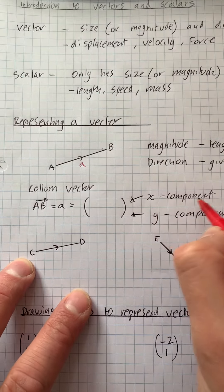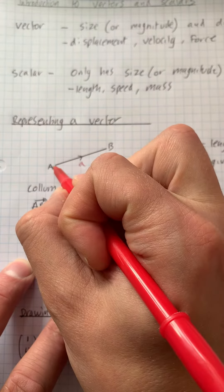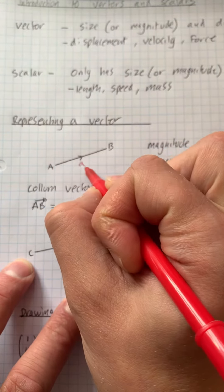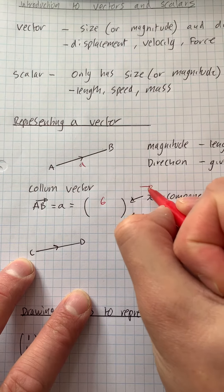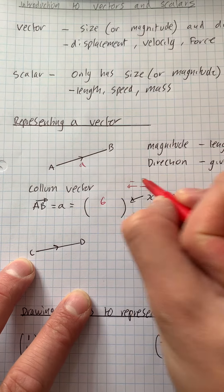And we can give that by the X component, which is how far it goes to the X. We've got 1, 2, 3, 4, 5, 6. So it goes 6 to the right, so that way it's positive, that way it's negative.